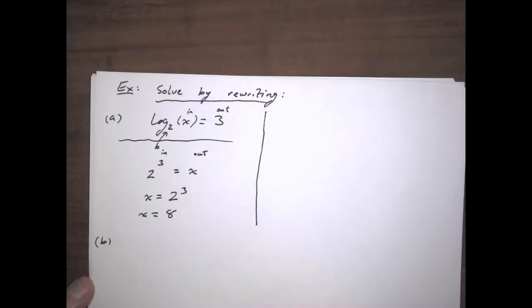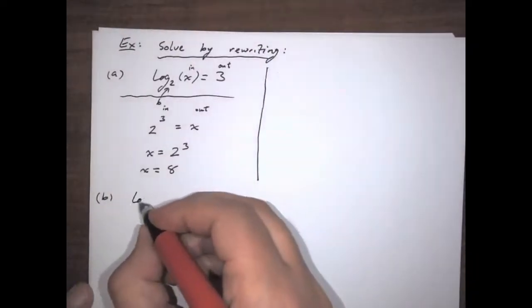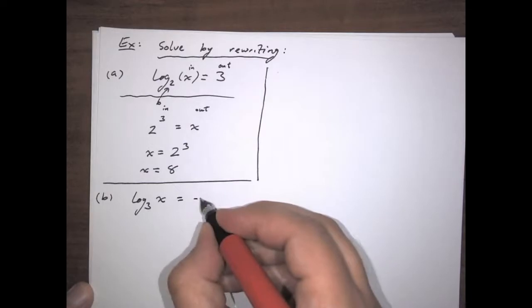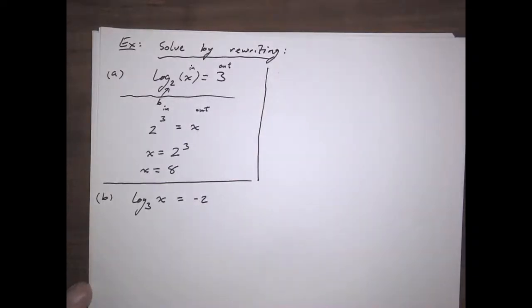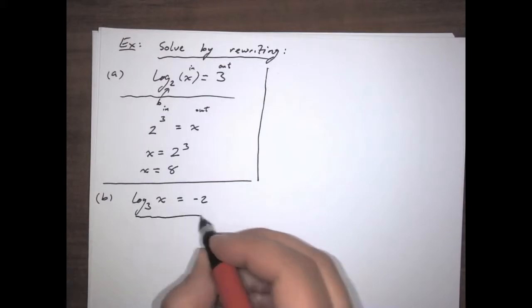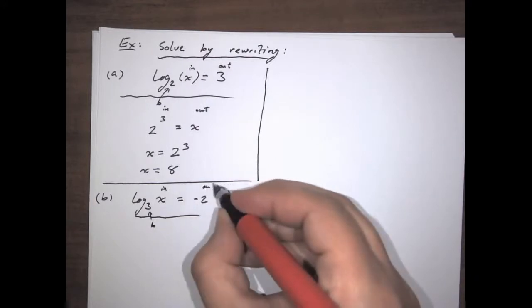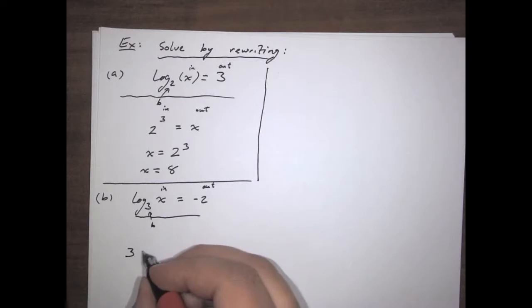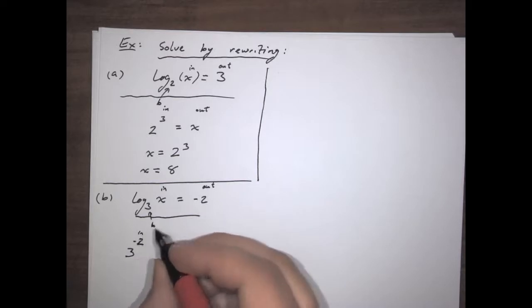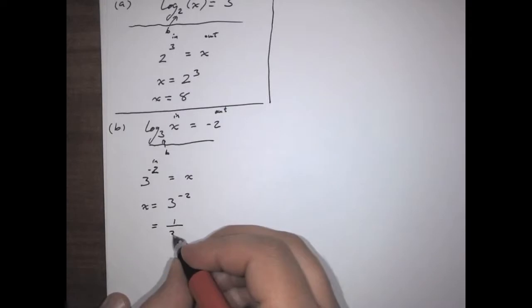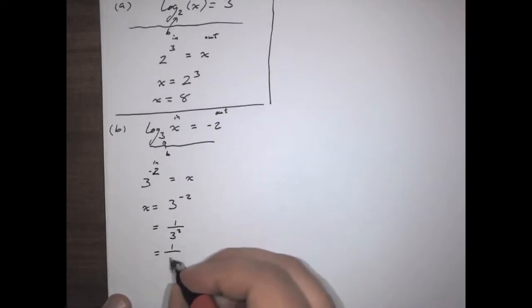Now let's try log base 3 of x equals negative 2. Once again, we have a base, an input of x, and an output. Base stays the base, the output becomes the input, so negative 2 becomes the new input: x equals 3 to the negative 2. That's the same as 1 over 3 squared, which is 1 over 9.